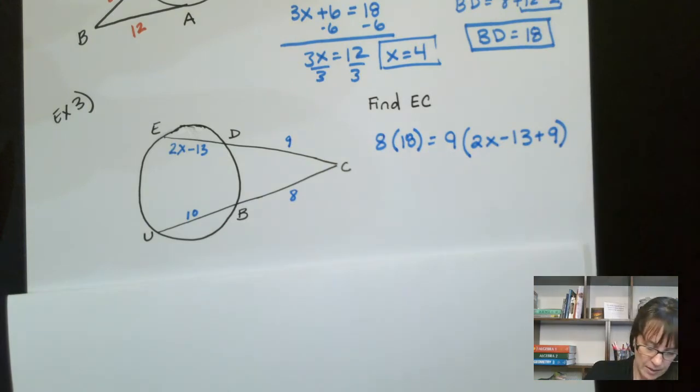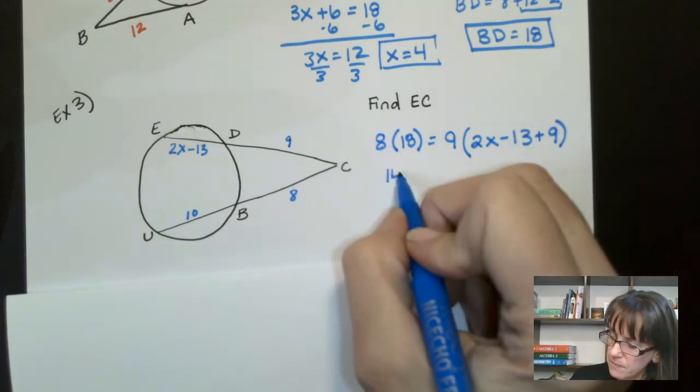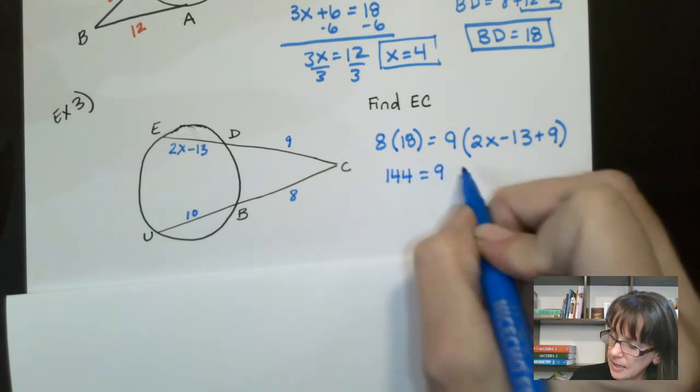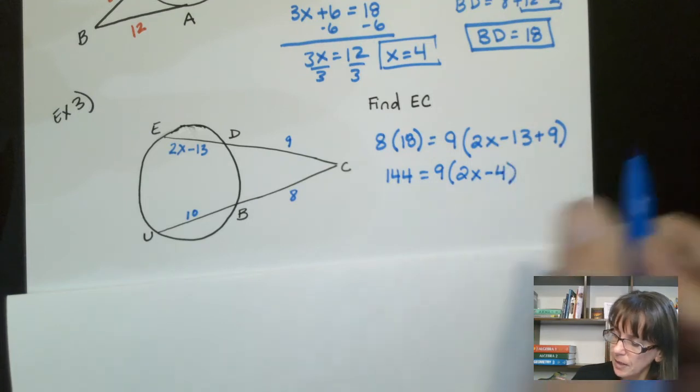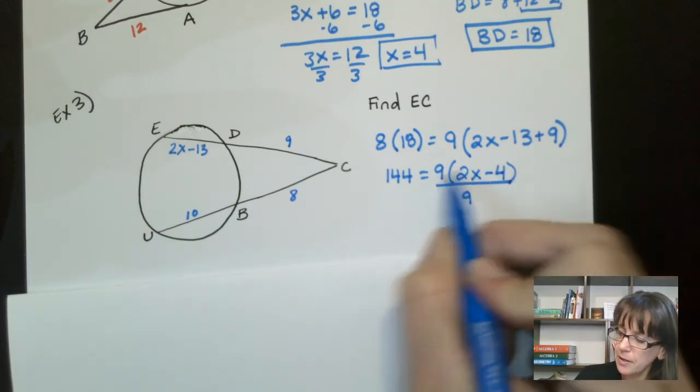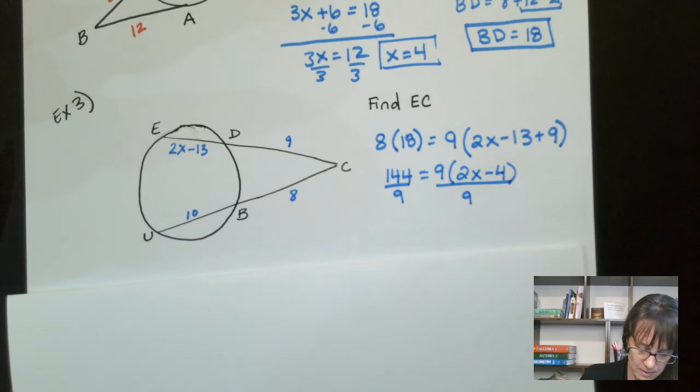So we have 8 times 18 gives me 144 equals 9. And then we have 2X minus 4. Now again, you could distribute that 9, but I'm just going to divide. I think that's easiest. And that will give us 16.